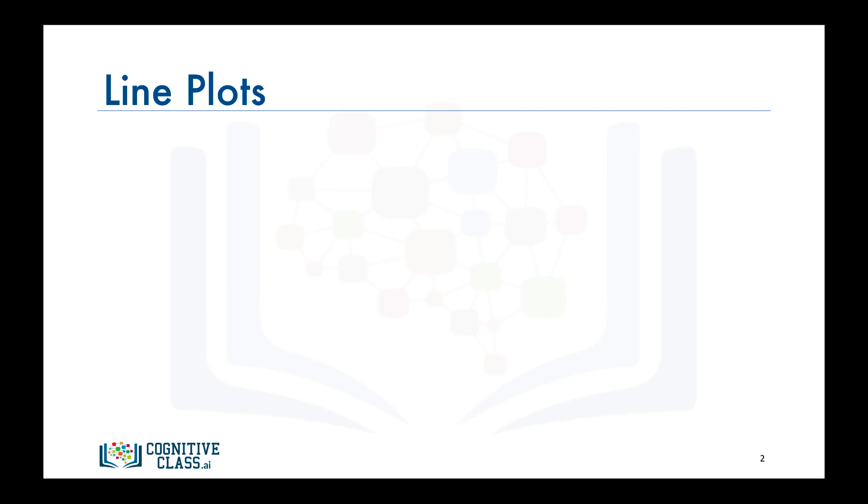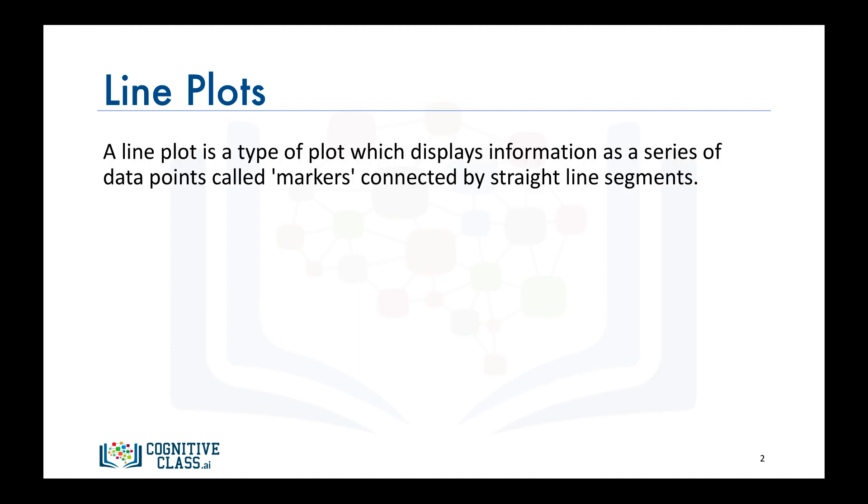So what is a line plot? As its name suggests, it is a plot in the form of a series of data points connected by straight line segments. It is one of the most basic types of charts and is common in many fields, not just data science.